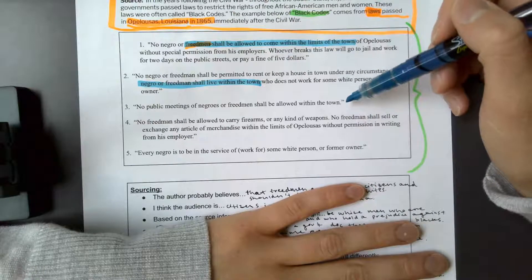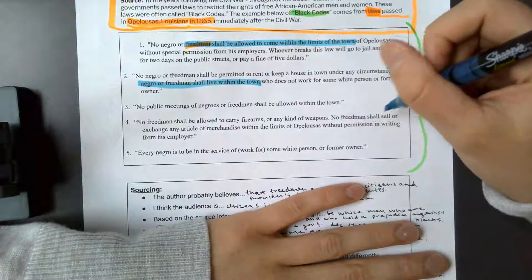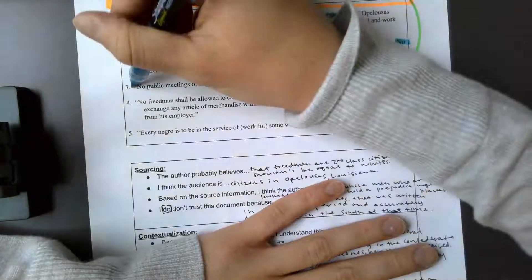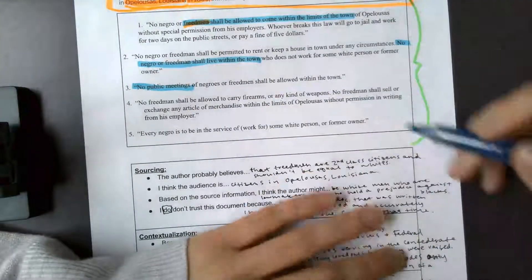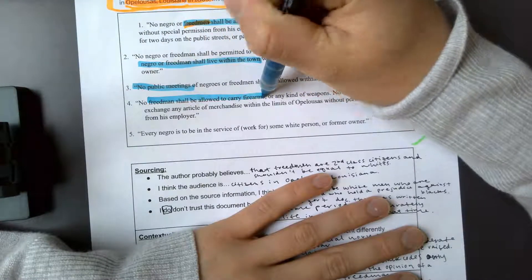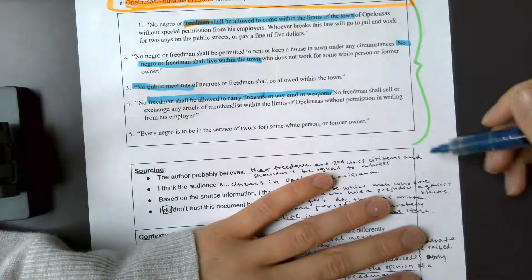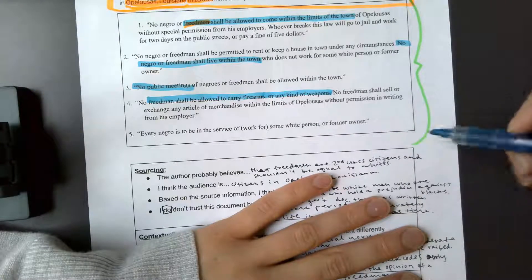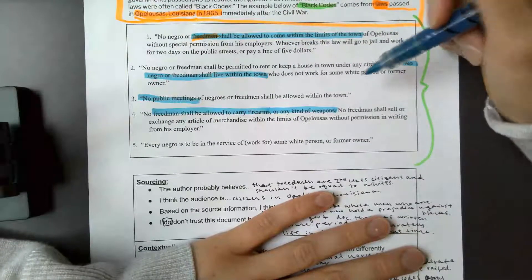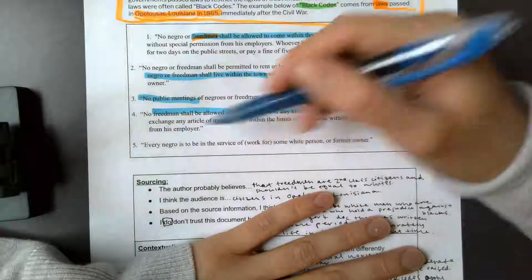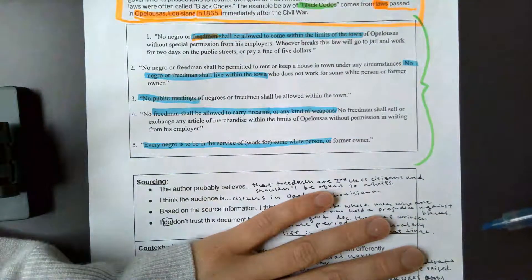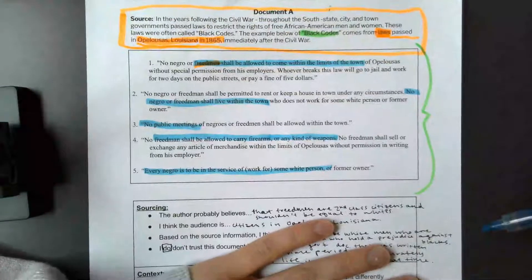Third, no meetings of freedmen. Freedmen are not allowed to meet. That would be the claim. Four, freedmen cannot carry firearms or weapons and they can't sell anything without permission from their employer. And then the last one, every freedman has to work for a white person. So those are our claims in this source.